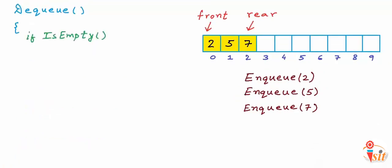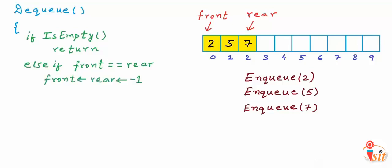Now let's write the dequeue function. If the queue is already empty, we cannot remove an element — we print or throw an error and exit. There is one more special case: if the queue has only one element, front and rear are equal. A dequeue in this case makes the queue empty, so we set both front and rear to -1. In the normal scenario, we simply increment front. We must be careful about corner cases — that's where most bugs come from.